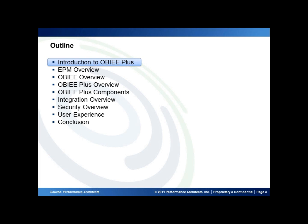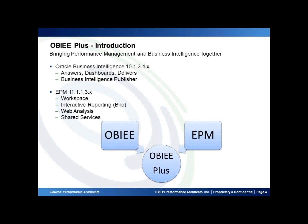And so that's the order and the content you see here. Without further delay, let's talk about OBIE+. So what is OBIE+? In short, it's bringing together performance management and business intelligence. Now that's a little bit of a misnomer because EPM already had some business intelligence worked into it already, but we'll see in the next few slides that that laid the groundwork for the OBIE integration very nicely.